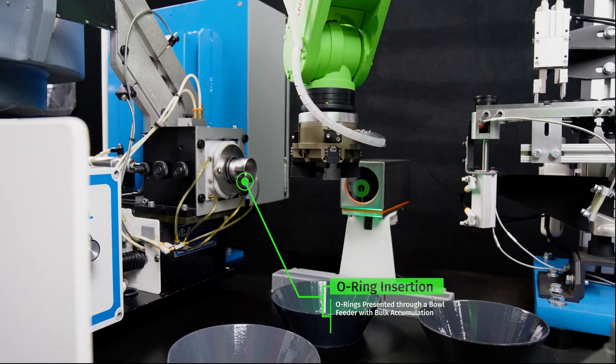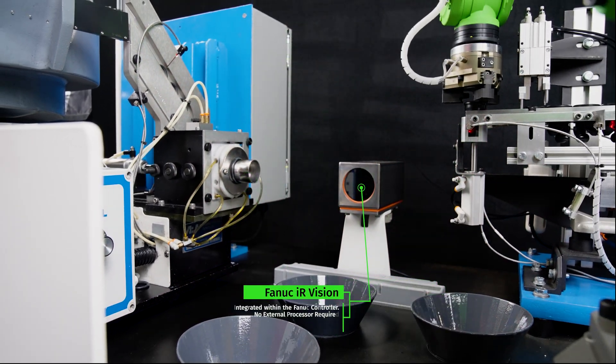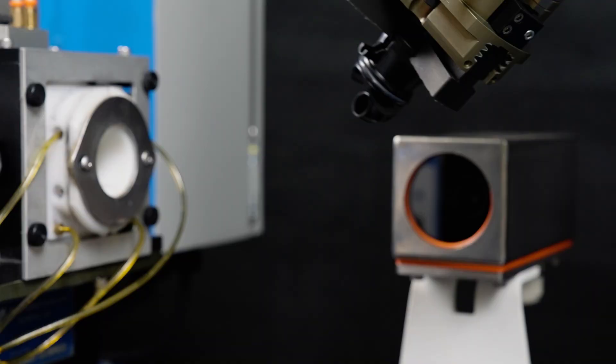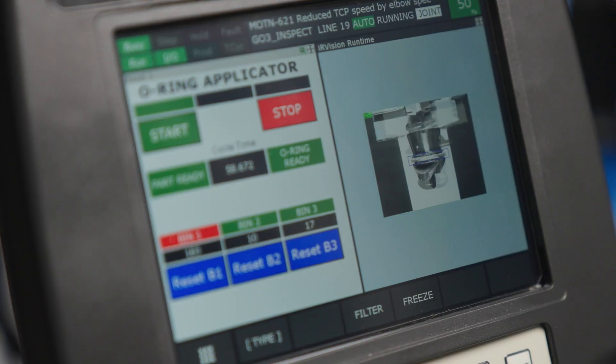After the application of the O-ring, the robot advances the part to a FANUC IR inspection vision that acquires two images to ensure the O-ring is inserted in the proper location.